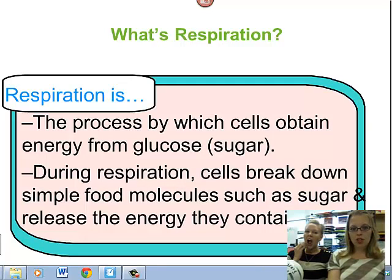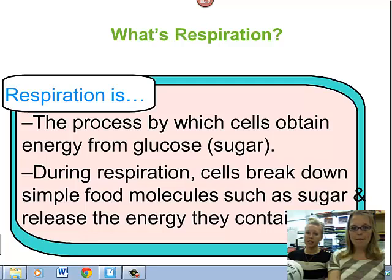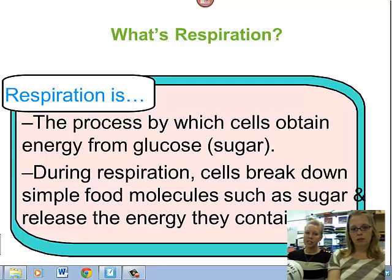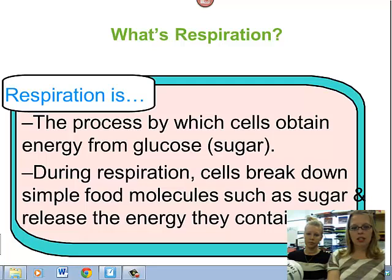So here's your official definition — take this down in your notes. Respiration is the process by which cells obtain energy from glucose, or sugar. That is the actual food you're putting into your body. So when you eat pizza or fruit, the glucose and sugar is pulled from that. Then the cells will break those down into simpler things and are able to release the energy.